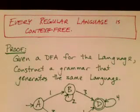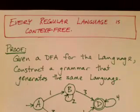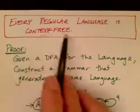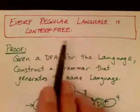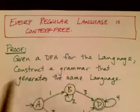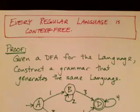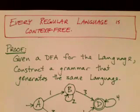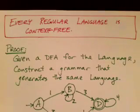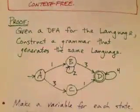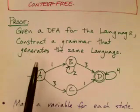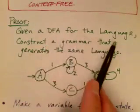Every regular language is context-free, and I want to talk a little bit more about that. Every regular language is context-free, but the subset relationship is a proper relationship — there are some languages that are not regular but that are context-free. The set of context-free languages is greater than the set of regular languages. If we've got a regular language, then by definition there must be a finite state automaton for that language.